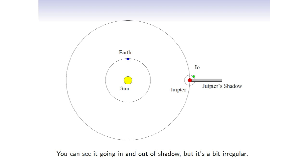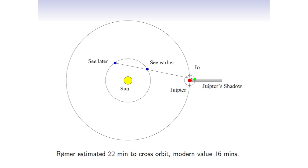And they thought this should be pretty regular, but they discovered it wasn't quite as regular as they thought it should be. And so a guy called Romer, who was a Danish guy, figured out why this was. If the Earth was closer to Jupiter, you saw it earlier. And if the Earth was far from Jupiter, you saw it later. And that was because light was taking longer and longer to get from Jupiter to the Earth, if it was further away. So Romer estimated 22 minutes to cross the orbit of the Earth. And the right answer these days is about 16.